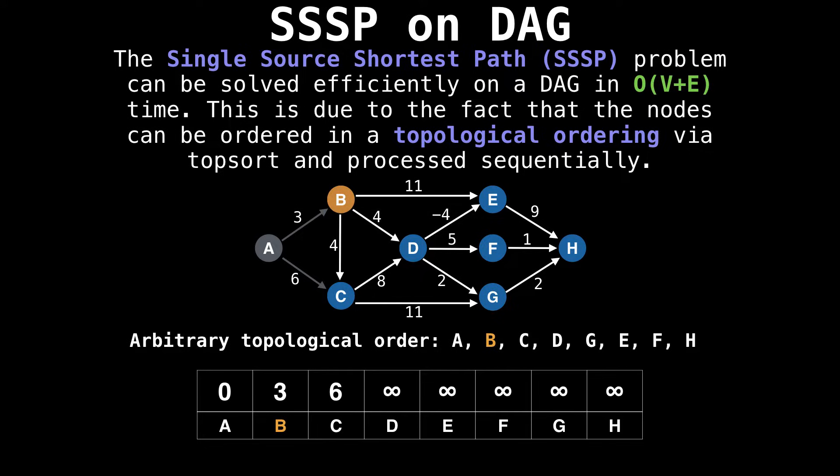And now we've explored all of A's edges and want to move on to the next node in our topological ordering, which is B, and explore all of its edges.